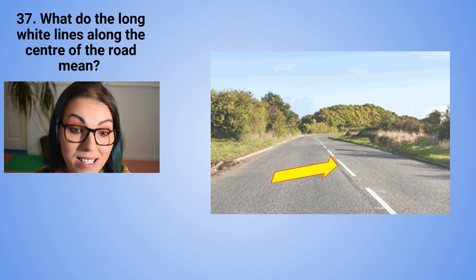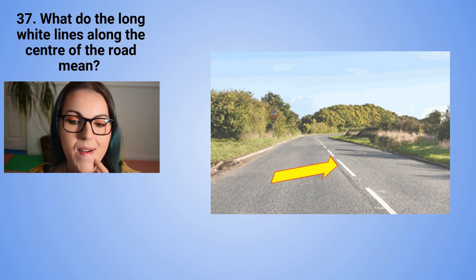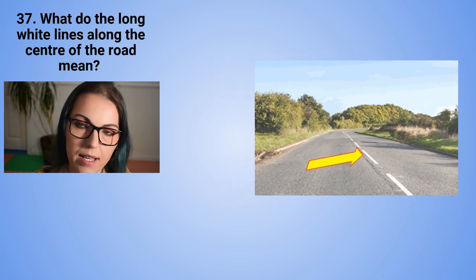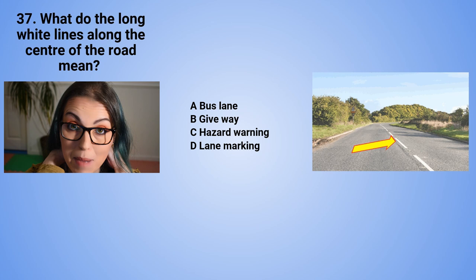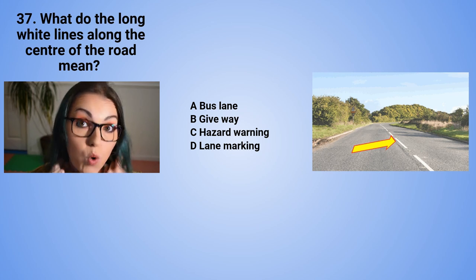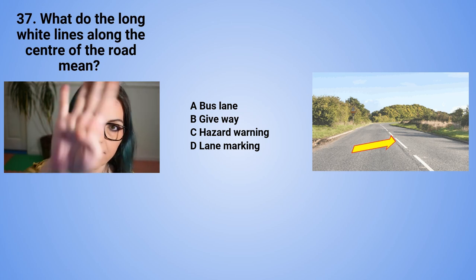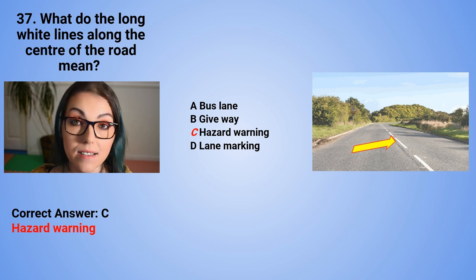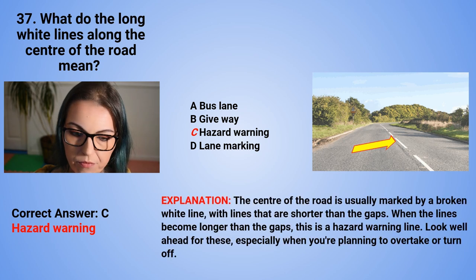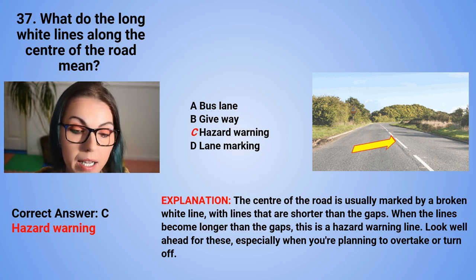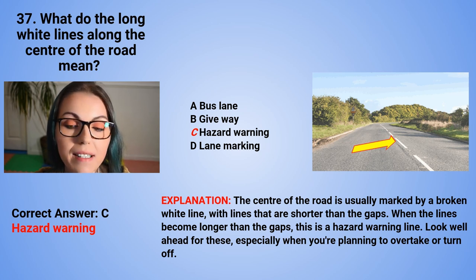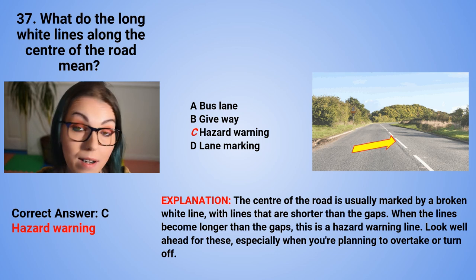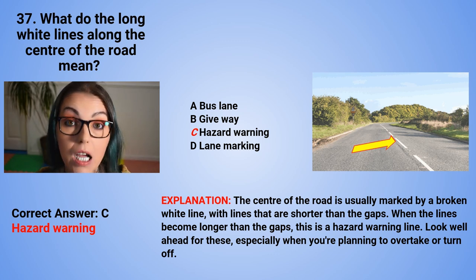Question 37: What do the long white lines along the centre of the road mean? Please pay attention to the yellow arrow showing the white lines. The correct answer is C — hazard warning. The centre of the road is usually marked by a broken white line with lines shorter than the gaps. When the lines become longer than the gaps, this is a hazard warning line. Look well ahead for these, especially when planning to overtake or turn off.